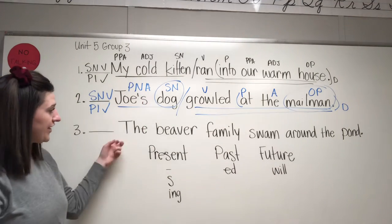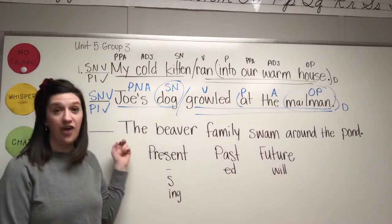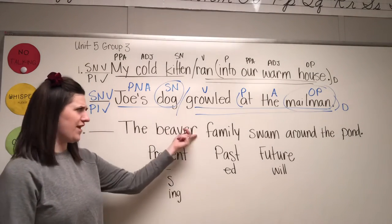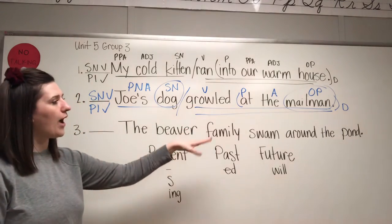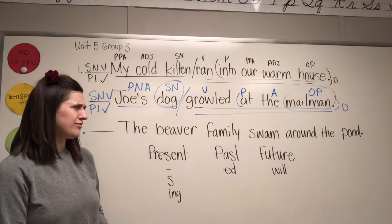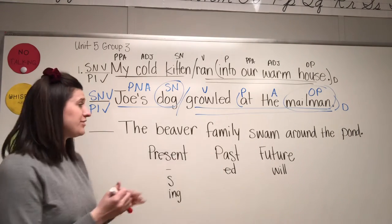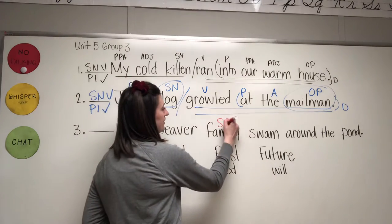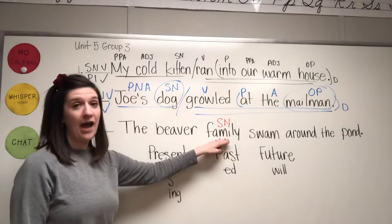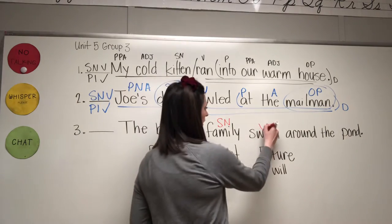Now sentence number three. The beaver family swam around the pond. What swam around the pond? Family. Subject noun. What is being said about family? Family swam. Verb.